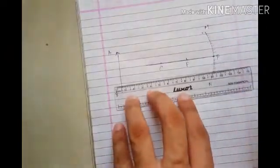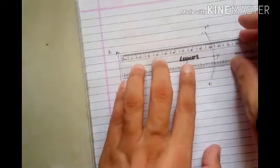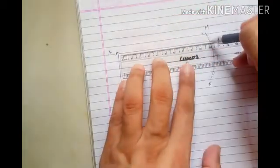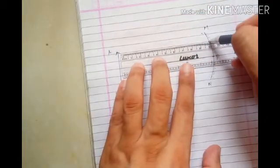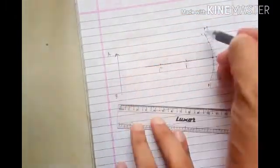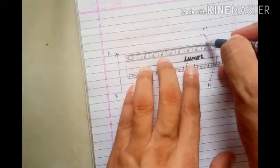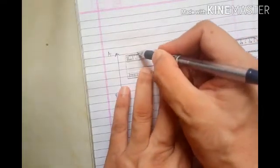We just need two rays to know where the image is formed. Let's draw any two rays. The object is at infinity - infinity means it's very, very far from this concave mirror. Let me draw the first ray that is parallel to the principal axis.